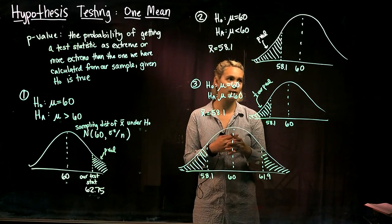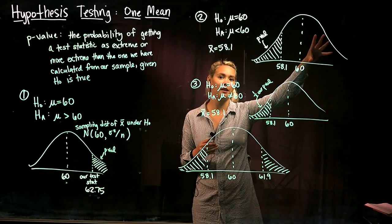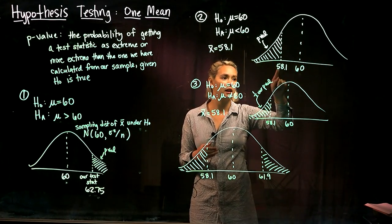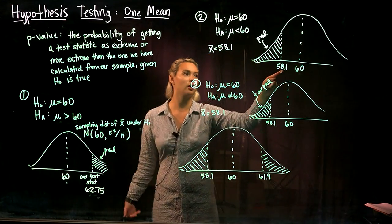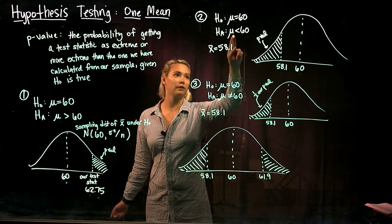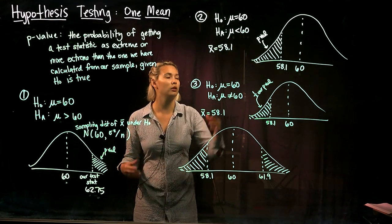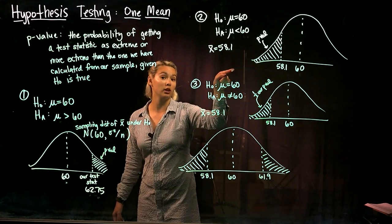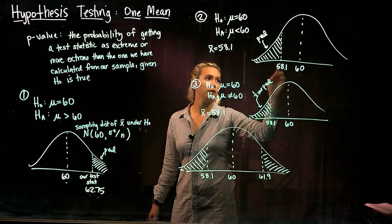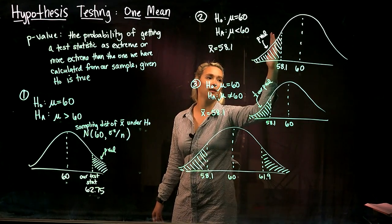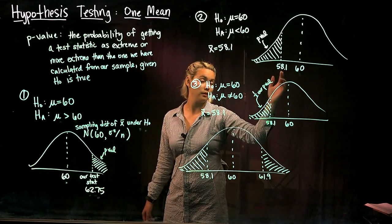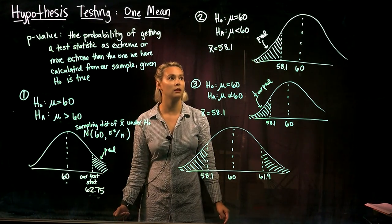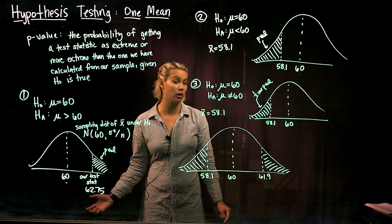If we're trying to look at the probability of getting different test statistics, those probabilities are given by the sampling distribution for x-bar. Here's our sampling distribution for the test statistic under the null hypothesis, and here's the particular test statistic we got based on our sample. We look at our alternative hypothesis to figure out which way is more extreme. If our alternative is mu is less than 60, then getting smaller and smaller x-bars is more and more extreme. So we draw in 58.1, and any x-bar less than 58.1 is more extreme — our p-value is that shaded area to the left.